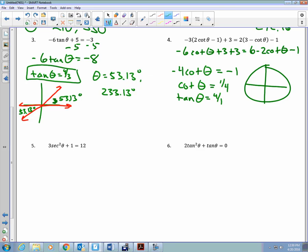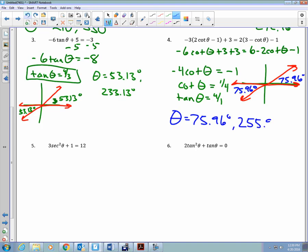So, I have tan(θ) = 4/1. Which quadrants is tangent positive? Again, first and third. We draw along the x-axis into the first quadrant. Along the x-axis into the third quadrant. I tangent inverse 4. 75.96. So, θ = 75.96 degrees and 255.96 degrees.